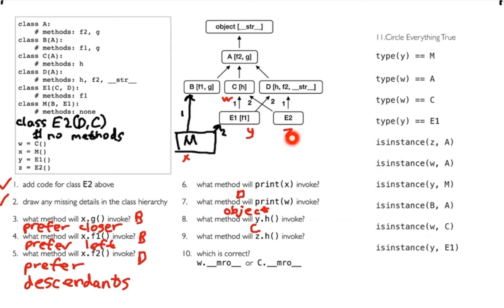What about Z? Z is of type E2 and has the same two parents. But now D is my preferred parent — you can see the 1 there — because if I look at E2, D comes before C, so D is my left parent in this case. So I'm going to call the D version. Even though Y and Z have the same parents, sometimes I'm going to inherit from one and sometimes from the other.